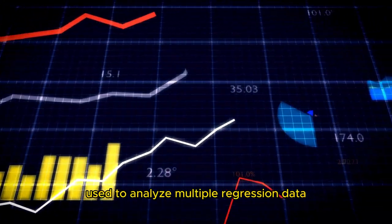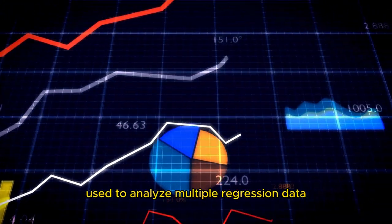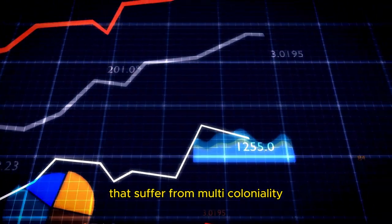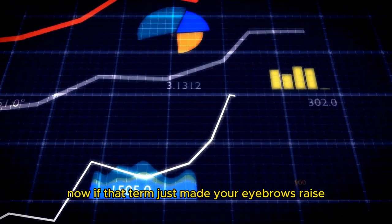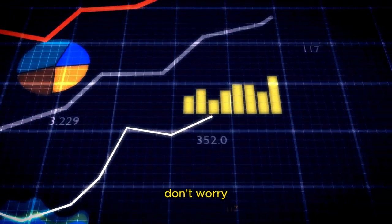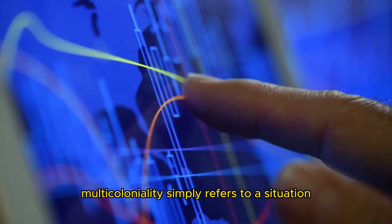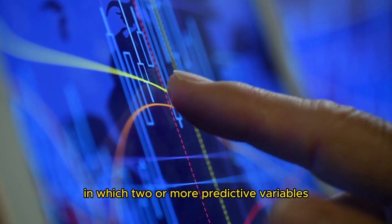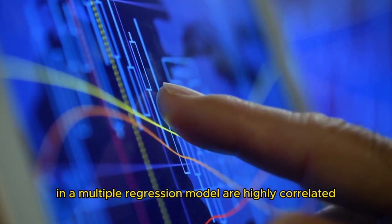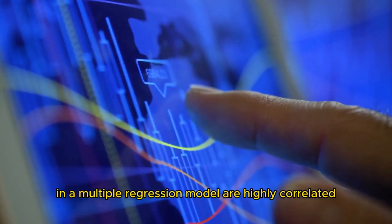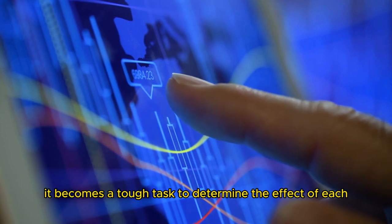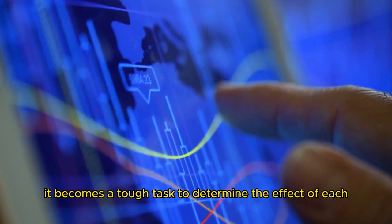ridge regression as a technique used to analyze multiple regression data that suffer from multicollinearity. Now if that term just made your eyebrows raise, don't worry. Multicollinearity simply refers to a situation in which two or more predictor variables in a multiple regression model are highly correlated. In such cases, it becomes a tough task to determine the effect of each predictor variable separately.